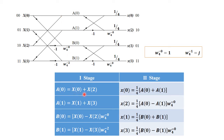Similarly it follows for A(1). For B(0), we take 1 from X(0) and 1 from X(2) multiplied by -1, then apply the twiddle factor. Therefore B(0) = (X(0) - X(2)) multiplied by the twiddle factor. Similarly it follows for B(1). The inputs used are X(0), X(2), X(1), X(3). These are all the expressions for the second stage, which is also the final stage.